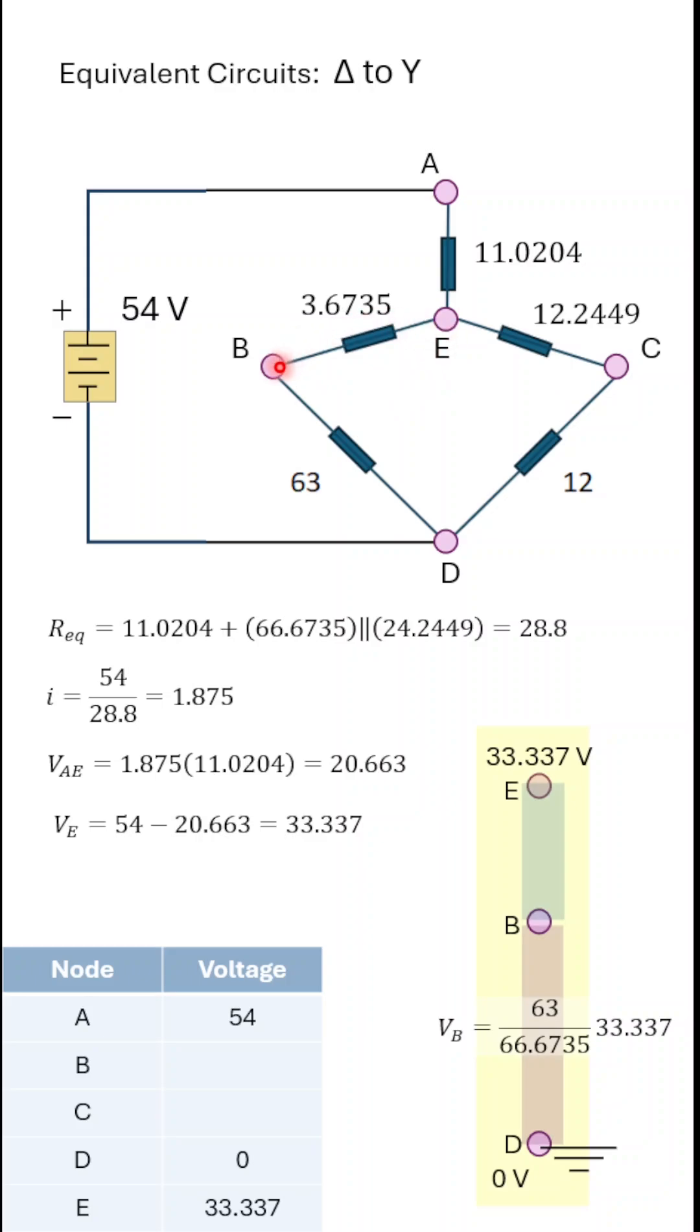From E to D, going through B or through C, we have two series circuits, and a series circuit is a voltage divider.